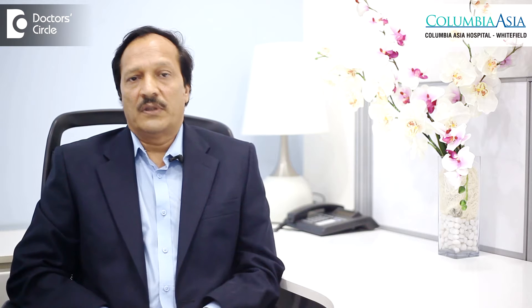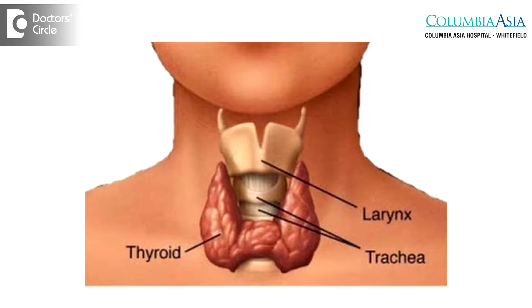The thyroid gland is a very essential endocrine gland which produces the hormone called thyroxine, which is essential for complete body metabolism. This thyroid gland is situated in the front of the neck, just below the Adam's apple. There are two glands — one is the right and the left lobe — connected towards each other in the center. Enlargement of this thyroid gland is called goiter.